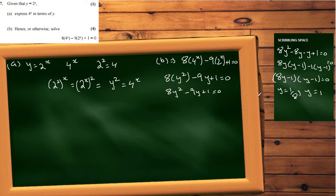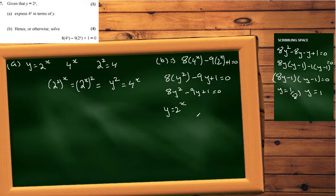Now we replace y with 2 to the x, since y equals 2 to the power of x was our original substitution. So we have 1/8 equals 2 to the power of x, and 1 equals 2 to the power of x.